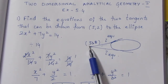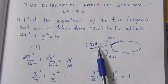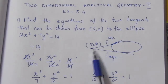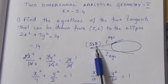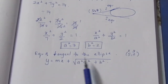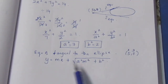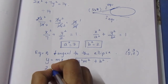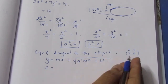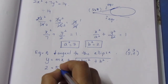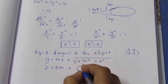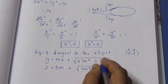Since we know the tangent equation and the point (5,2) lies on it, we can substitute that point. Substituting a² = 7, b² = 2, and the point x = 5, y = 2: we get 2 = 5m + √(7m² + 2).